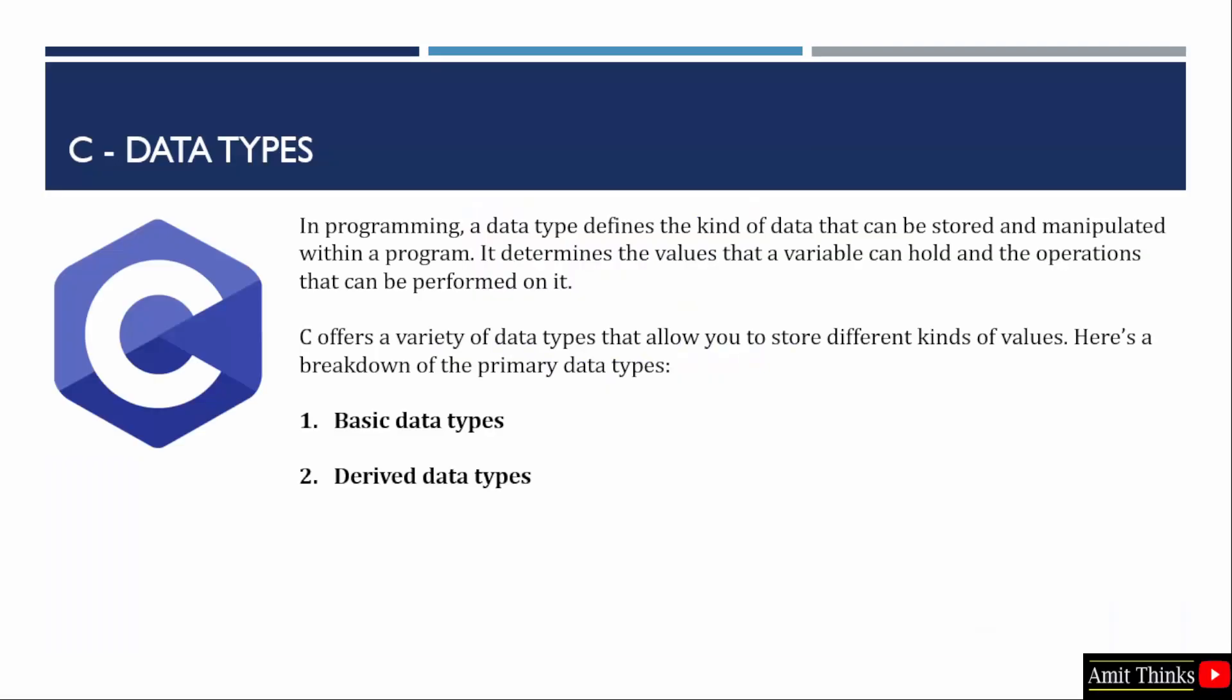A data type is an attribute of data that tells the compiler or interpreter how the programmer intends to use the data. Consider data types as the kind of data that can be stored and manipulated within a program. The following are the two types of data types in C language: Basic and derived. Let us understand them.